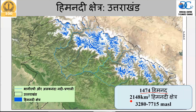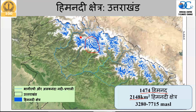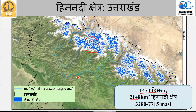Approximately 1400 to 1450 glaciers are in Uttarakhand, with a total area of approximately 2148 square kilometers, varying in elevation from 3000 to 7000 to 7800 meters. We have the Gangotri glacier, and on another side of Gangotri you have the Satopanth glaciers, a series of glaciers. Then there is the Alaknanda river and the Bhagirathi river.